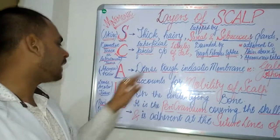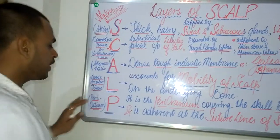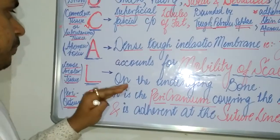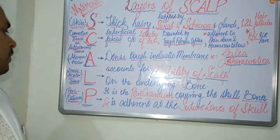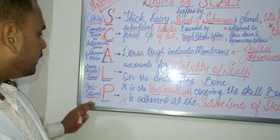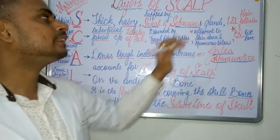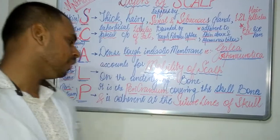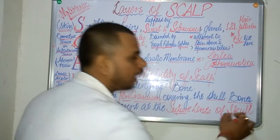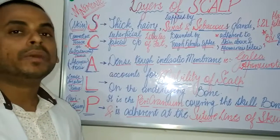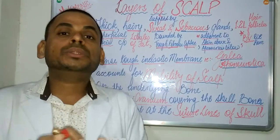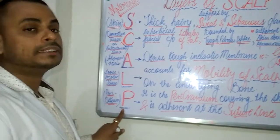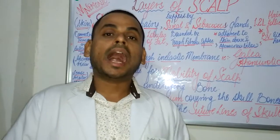The L of SCALP refers to the Loose areolar tissue, which lies on the underlying bone. Finally, the P of SCALP refers to the Periosteum, also called the pericranium. This is the deepest layer of the scalp. The pericranium covers the skull bone and is firmly adherent to the suture lines of the skull.